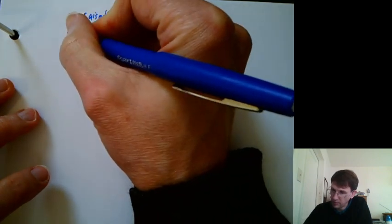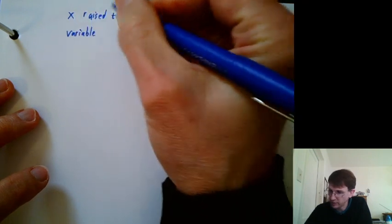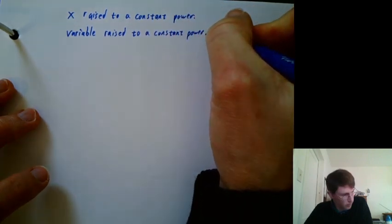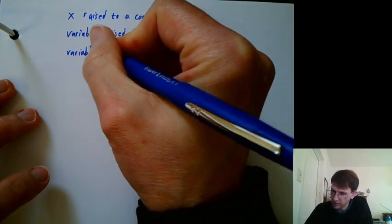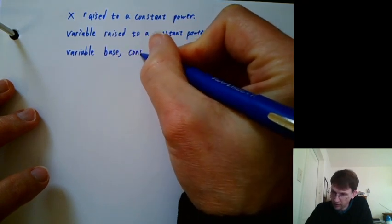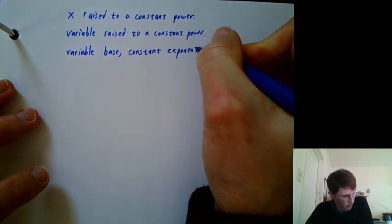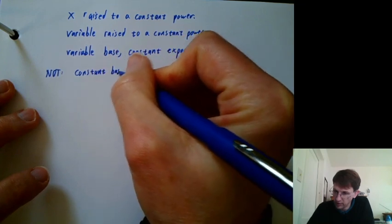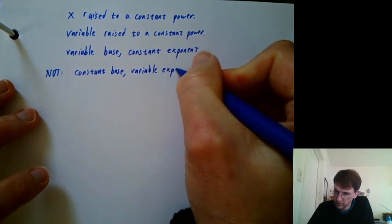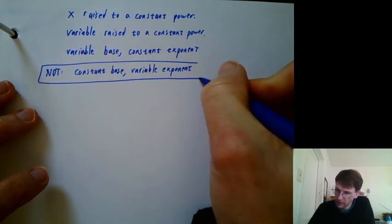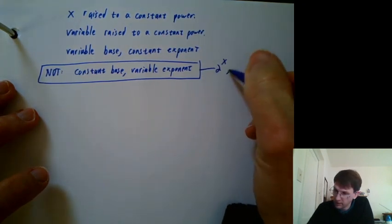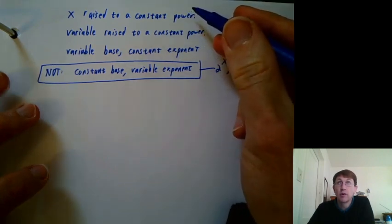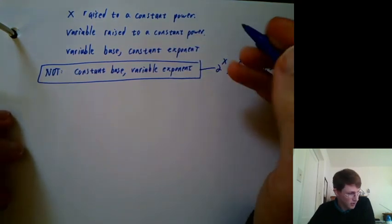Or you could say it's a variable raised to a constant power. It could be t, for example, or s or something. Or you could say it's a variable in the base and a constant exponent. In particular, what it is not is a constant base with a variable exponent. So, what are some functions that have a constant base and a variable exponent? Things like 2 to the x, 10 to the x, e to the x, 0.5 to the x. So, what we just did was, you could say these three ways, but not these ways.